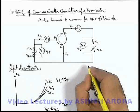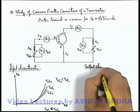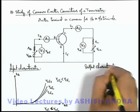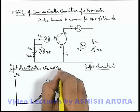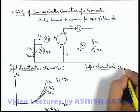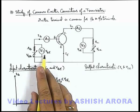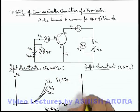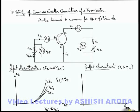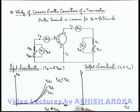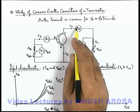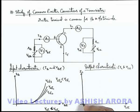Now, if we draw the output characteristics for this common emitter connection — the input characteristic is plotted between IB and VBE — similarly the output characteristic is drawn between IC and VCE at specific values of base current. If we plot the variation of collector current with collector-emitter voltage: when VCE is zero, no current flows, so the graph starts from the origin. As we increase VCE, the emitter current passes through and increases, then later becomes almost constant with only a slight variation.